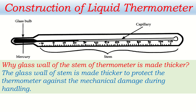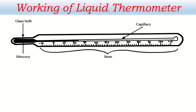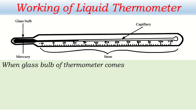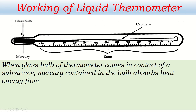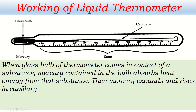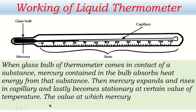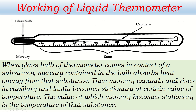One last question about the working of a liquid thermometer. When the glass wall of the thermometer comes in contact with a substance whose temperature is being measured, the mercury in the bulb absorbs heat energy from that substance. Then mercury expands and rises in the capillary, and finally becomes stationary at a certain value of temperature. The value at which mercury becomes stationary is the temperature of that substance.